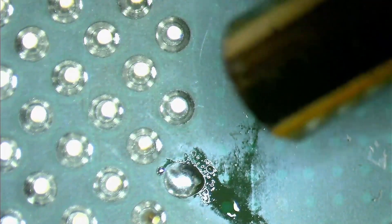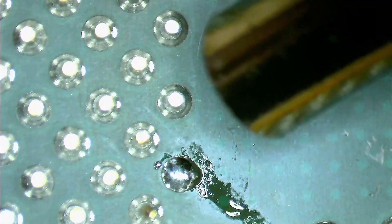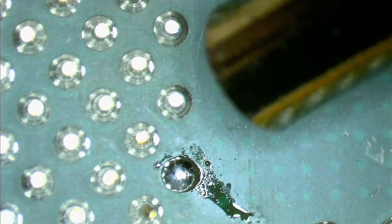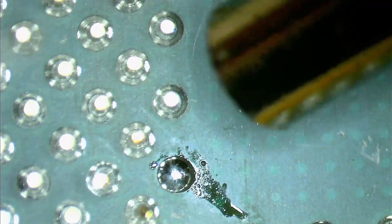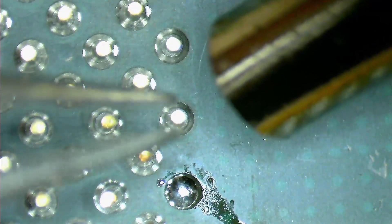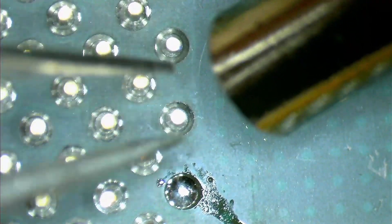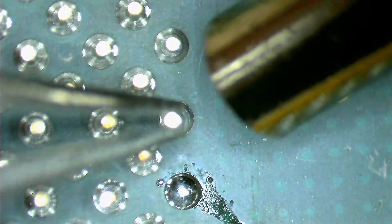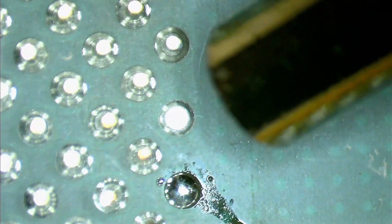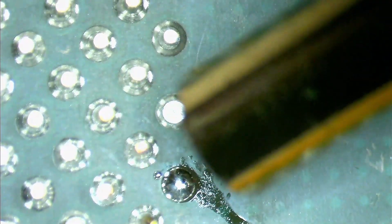And although it was set to the lowest airflow, the air pressure was still too strong. Once the solder melted on multiple pins, some of them were just pushed around and became misaligned. I cannot reduce the airflow any further, but I can change the nozzle to a larger one and increase the distance between the pins and the nozzle. This learning curve is quite steep, but I am sure it will get better over time and with more practice.